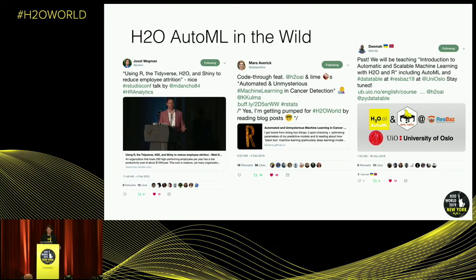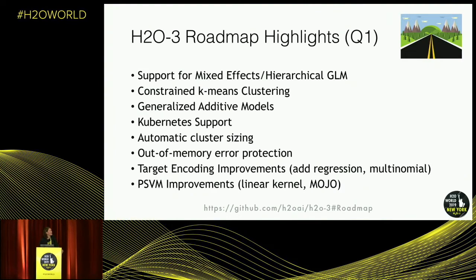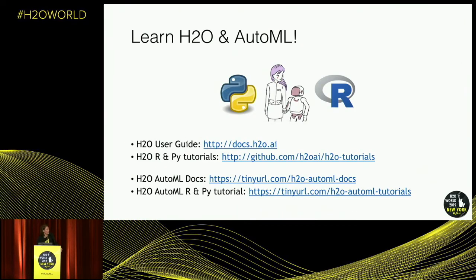A lot of people are using AutoML for all different things, including teaching at universities. On the H2O3 roadmap, coming soon: support for mixed effects and hierarchical GLMs, constrained k-means clustering, generalized additive models (which I'm excited about and will likely go into AutoML as a model type), and Kubernetes support for DevOps. There are also links for new users and tutorials covering AutoML and other new use cases.